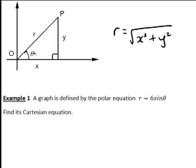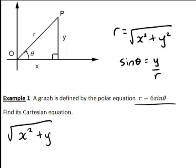This example shows the first quadrant, but this will actually work for any point. You'll notice sin theta, which is what we have on the right hand side, is always the opposite over the hypotenuse, which is y divided by r. Therefore, we could rewrite this equation: r becomes square root of x squared plus y squared, and then the right hand side becomes 6 times y divided by r.